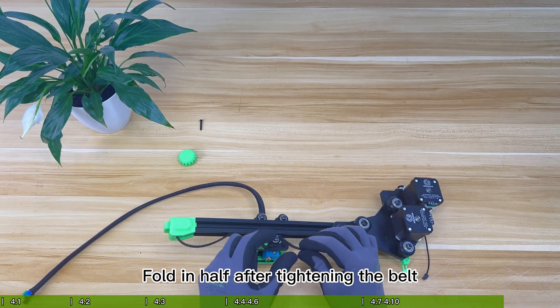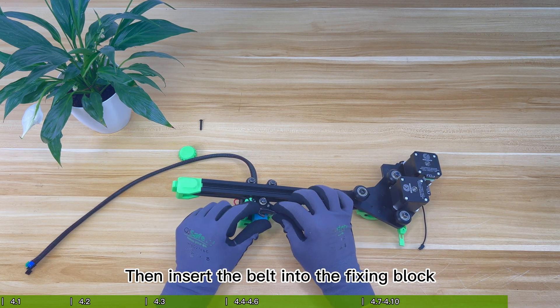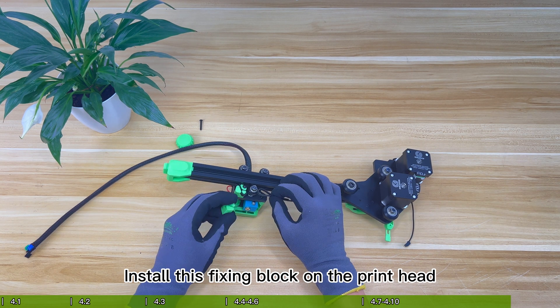Fold in half after tightening the belt. Make the fold just enough to touch the pulley of the print head. Then insert the belt into the fixing block. Install this fixing block on the print head.